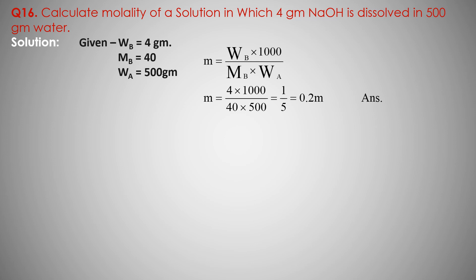Molality formula: small m equals Wb upon Mb into Wa, multiply by 1000. Putting values: Wb is 4 gram, Mb is 40, Wa mass of solvent is 500 gram, multiply by 1000 and divide. Answer is 1 by 5, which equals 0.2. Molality of solution is 0.2.